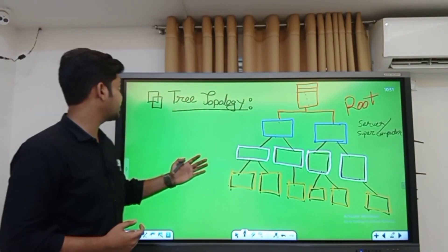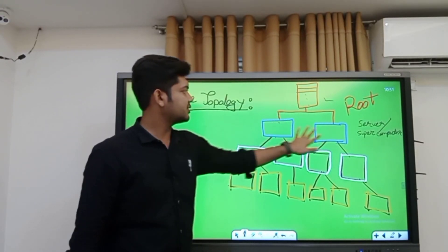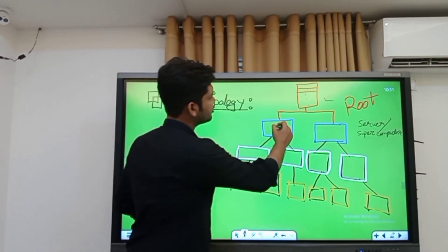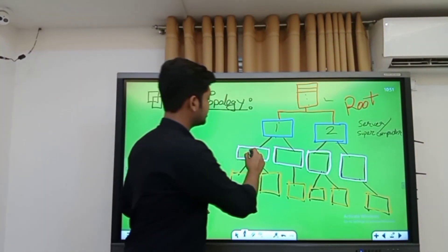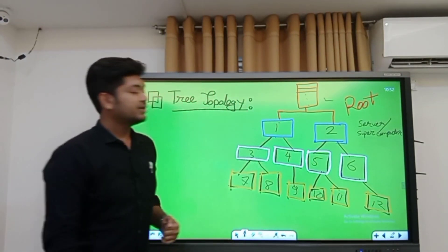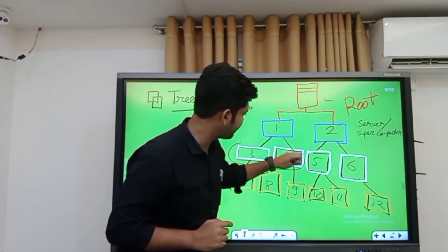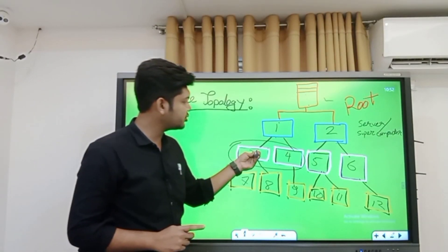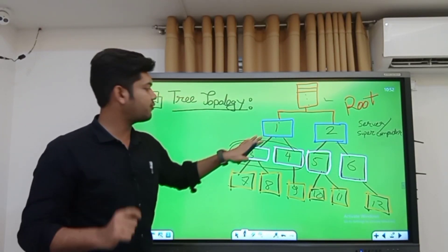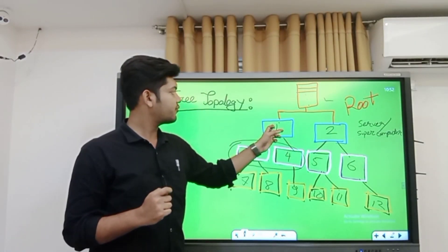I have drawn a figure for you. This is basically a tree topology and this is the main root. From the root there can be a server or supercomputer, and from that the computers will be connected with each other. I am numbering them: one, two, three, four, five, six, seven, eight, nine, ten, eleven, and twelve. We can see that number three and number four are coming from number one, so number one is the host for number three and number four.